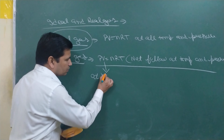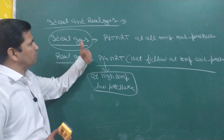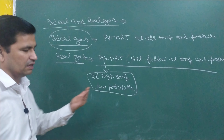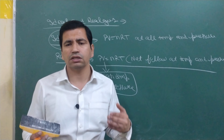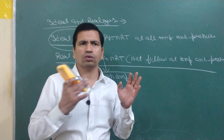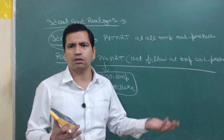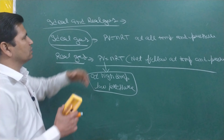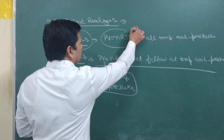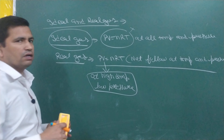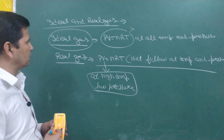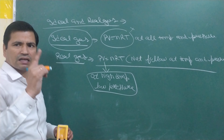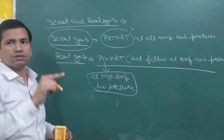Now the question is: since no gas is ideal, when will PV = nRT be followed? When temperature is high and pressure is low. Ideal gas is a hypothetical, imaginary concept — a gas where no matter how high or low you make the temperature or pressure, PV = nRT is followed everywhere. That is ideal gas, but in actuality such a gas does not exist.